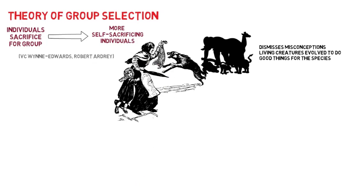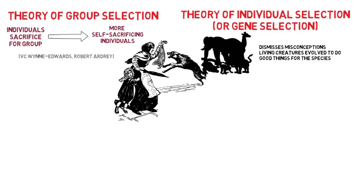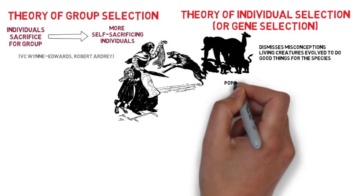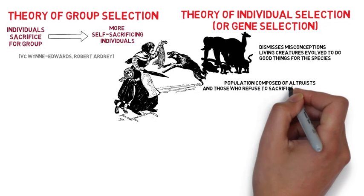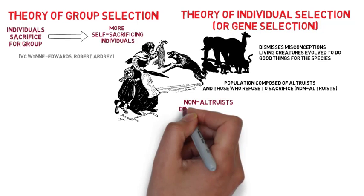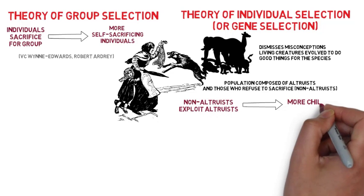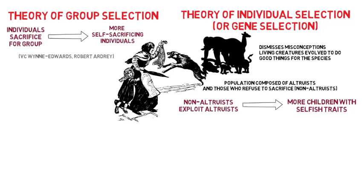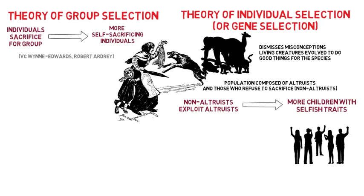The opposing theory of individual selection, or gene selection, states that although there are altruists, there will likely be dissenting minorities who refuse to make sacrifices. The dissenter would exploit the altruism of the rest and are more likely to survive and have children who inherit selfish traits. After a few generations, the altruists will be overrun by the selfish individuals.